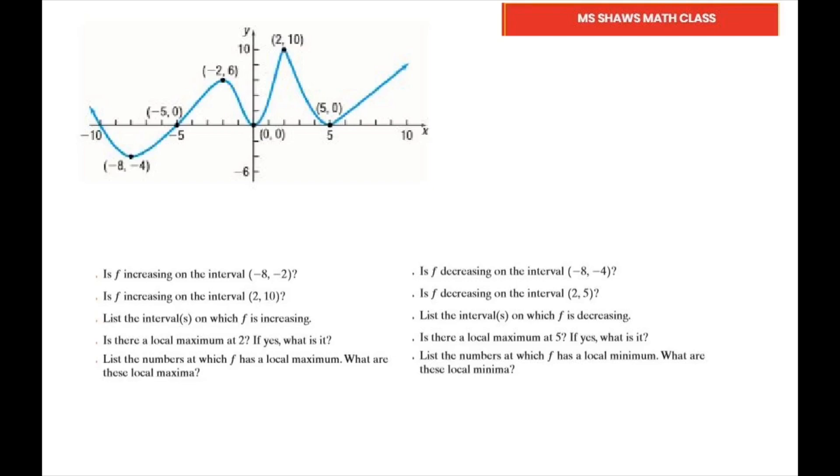The first question is: is F increasing on the interval (-8, -2)? This is graph F. They're talking about your x-values because it's an interval, not a point. Here's x = -8, and x = -2 is right here. If I look at the graph from -8, we're at -4 here, it is increasing. So that's a yes.